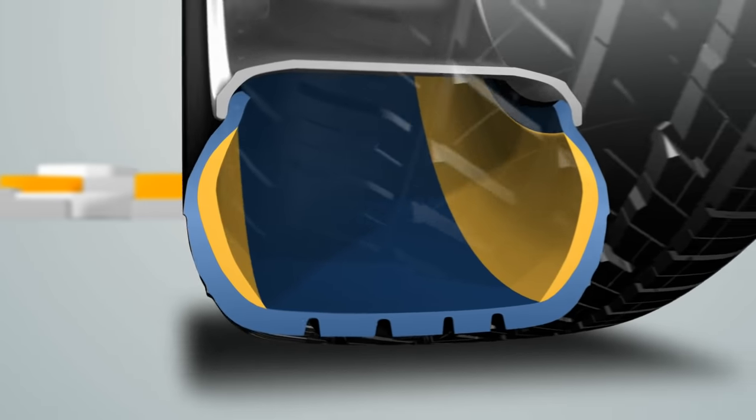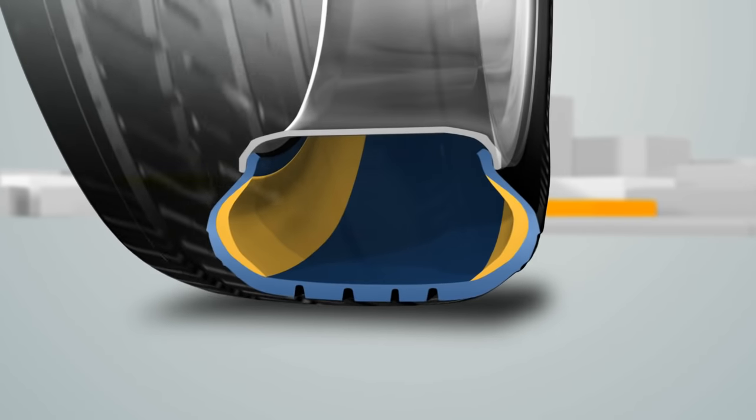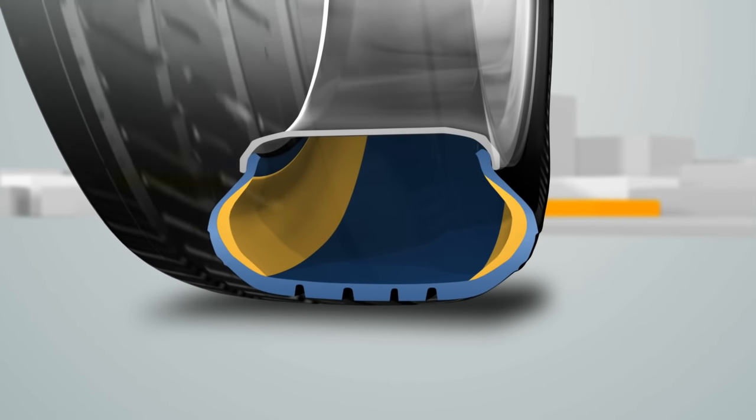When a run-flat tire is punctured, it loses air, but it continues to support the vehicle's weight using the sidewall supports.